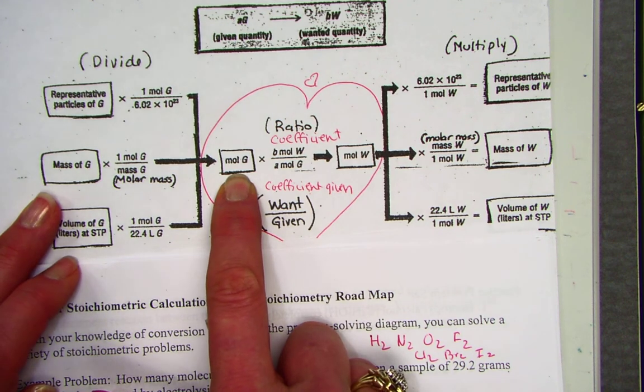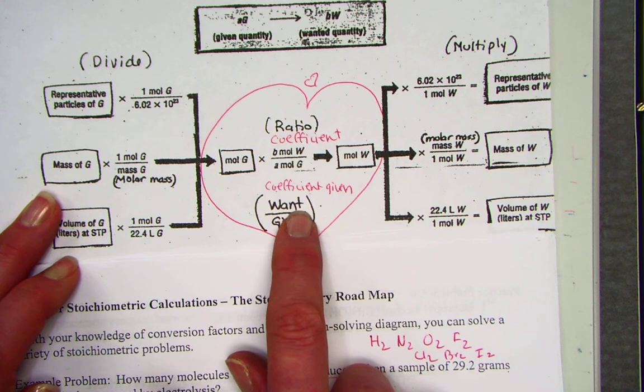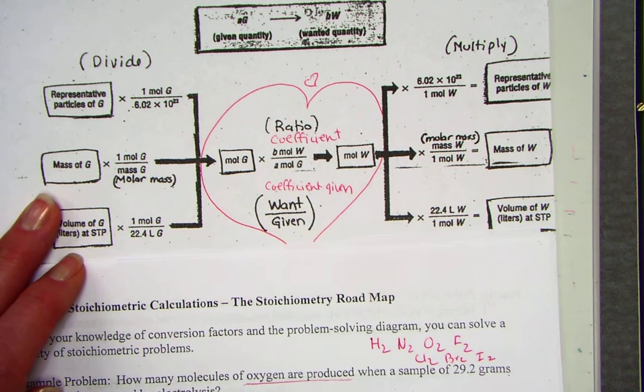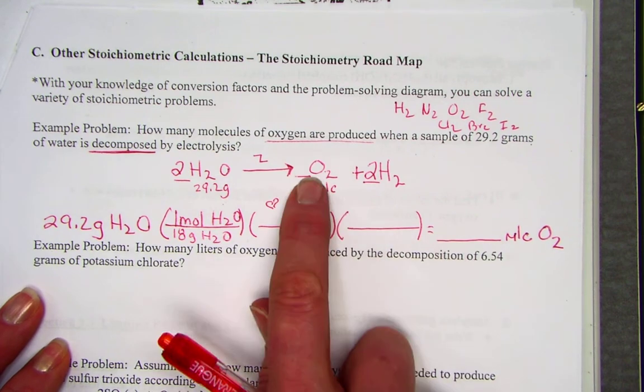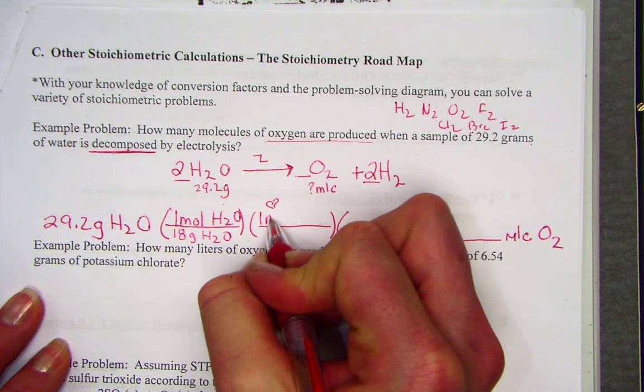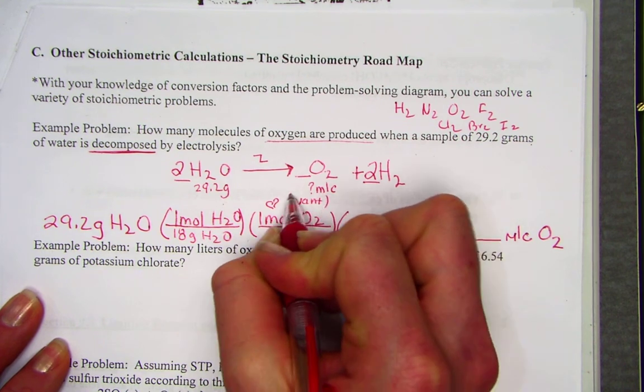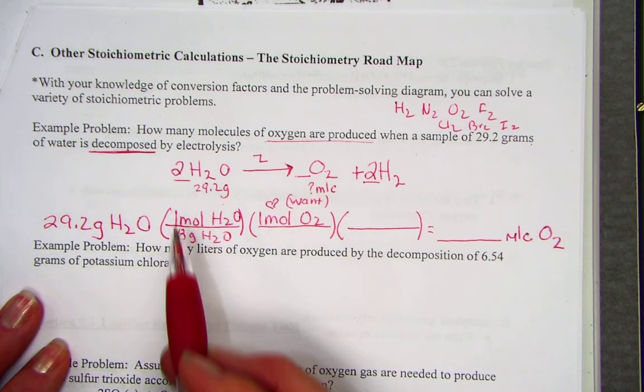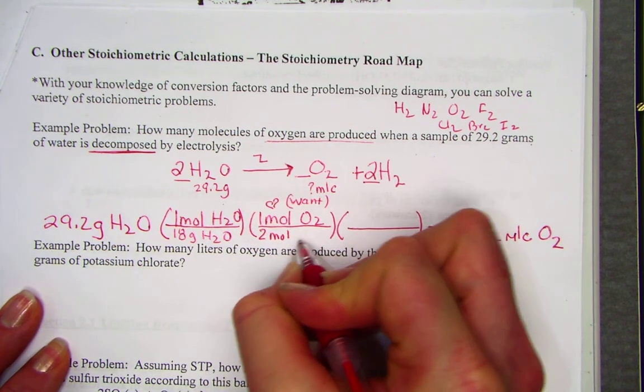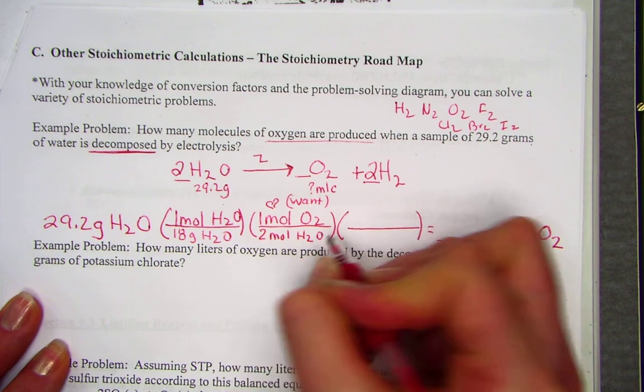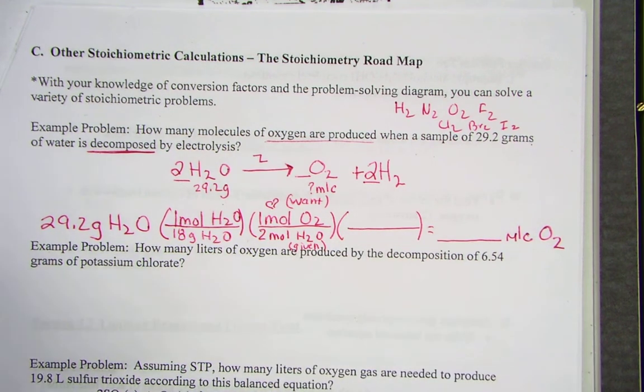To set up our ratio, the heart of our problem, we think want over given. We want to know the oxygen. That's our target. Its coefficient is a one. On the top, we'll place one mole. That's what we want. And on the bottom, we started with water. Its coefficient is a two. Want over given, our stoichiometric ratio of one half.